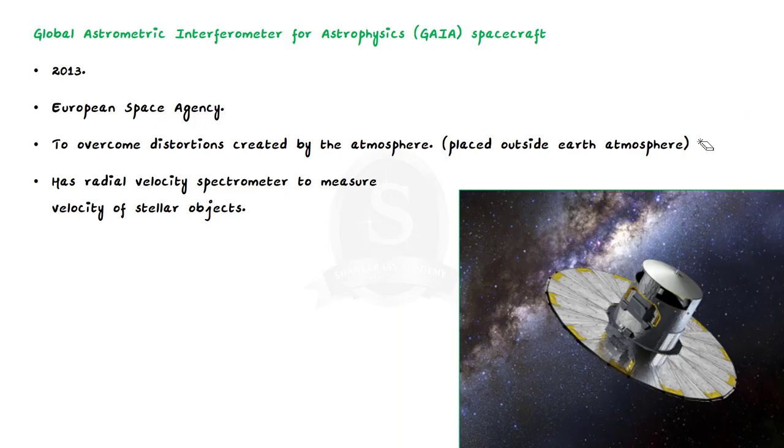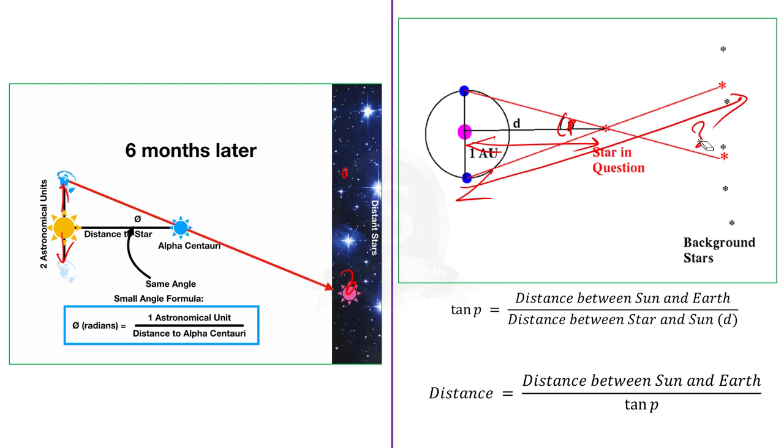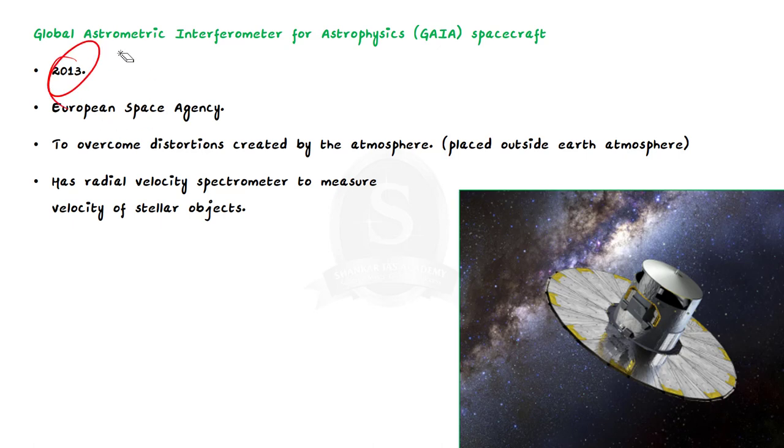Using this simple calculation, we are measuring the distance of stellar objects. But there is one small issue here. The light rays from stellar objects are distorted by our Earth's atmosphere before they can reach our land-based telescopes. To address this, in 2013, the European Space Agency launched the Gaia spacecraft, that is Global Astrometric Interferometer for Astrophysics.